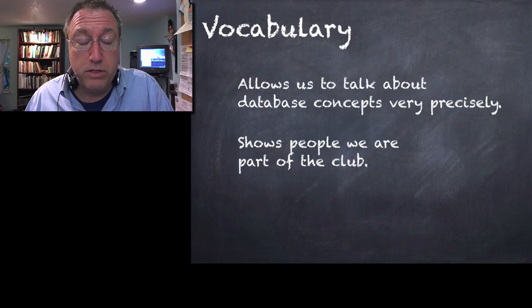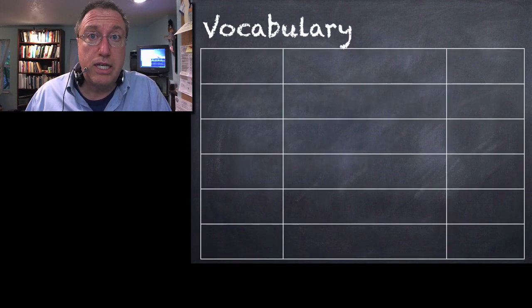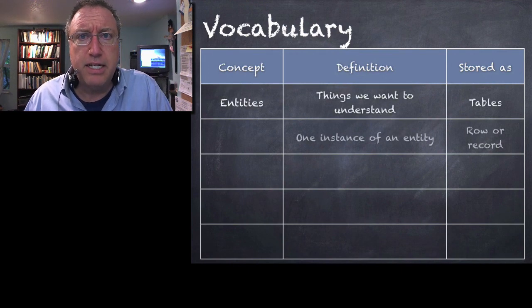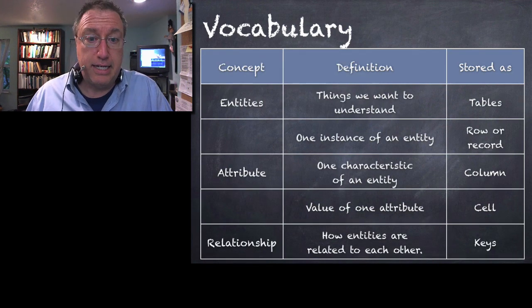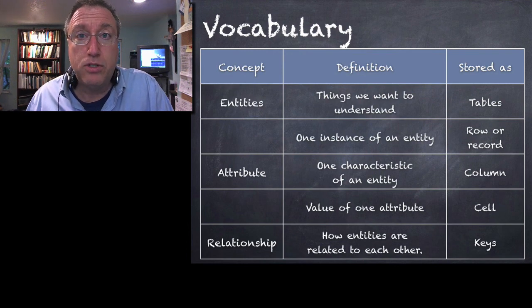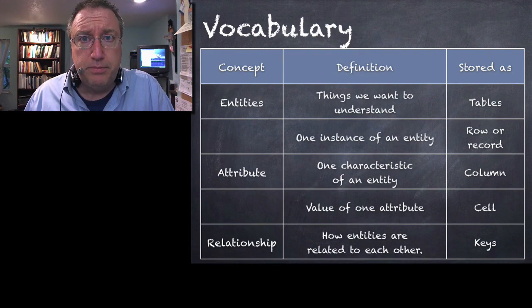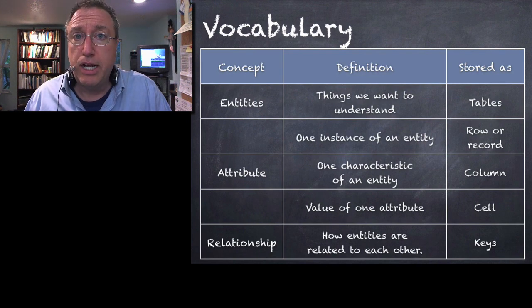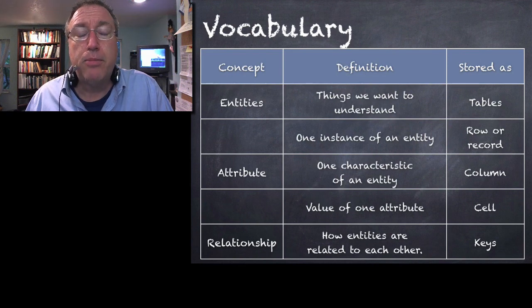So I recommend that you get yourself a spreadsheet or some other file and you start organizing the terms that we are going to introduce in this class. Each concept has a definition and then these database concepts are implemented or stored in a particular way. So for example, like we said earlier, entities are things we want to understand, things we want to store. We store them in tables. Each row in a table stores one particular instance of an entity and we call it a record. The characteristics of an entity are called attributes and we organize them in columns. The value of one attribute for one particular entity is stored in the cell of the table. And we connect entities to each other through relationships and we implement those with primary and foreign keys.